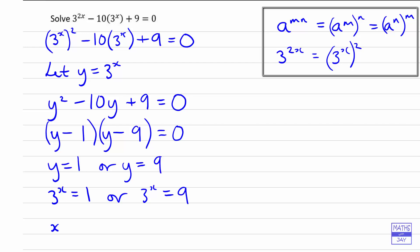So anything to the power of 0 is 1, so x is 0 if 3 to the x is 1. And we know that if 3 to the power of something is 9, then that something must be 2, because 3 squared is 9.